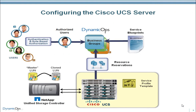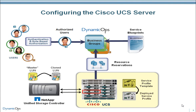Based on resources reserved for Mary's group and service levels defined in the blueprint, Dynamic Ops selects the appropriate Cisco blade server. It then orchestrates the configuration by applying the UCS Service Profile template specified in the blueprint. The cloned NetApp LUN is then associated with the server by configuring appropriate Cisco MDS SAN zoning, and the blade is powered on.